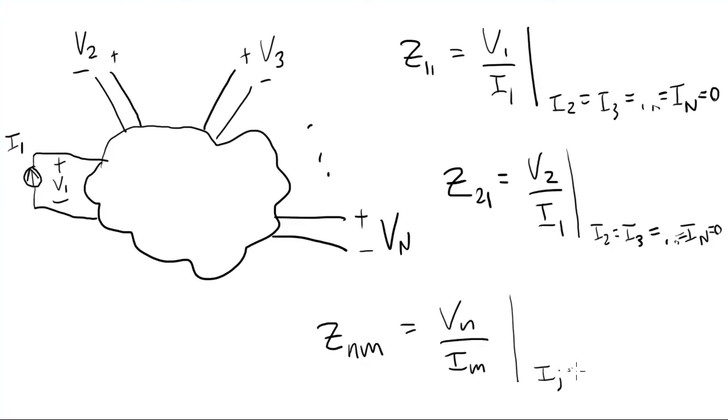We can write a general expression for the matrix element ZNM. It's going to be the voltage at port N over the current going into port M. And the requirement is that there's no current going into any other port. So conceptually, what you're doing is moving around this test current and looking at the resulting voltages.